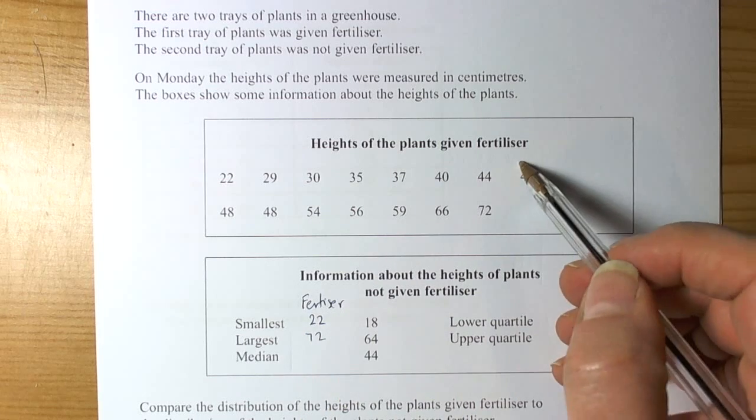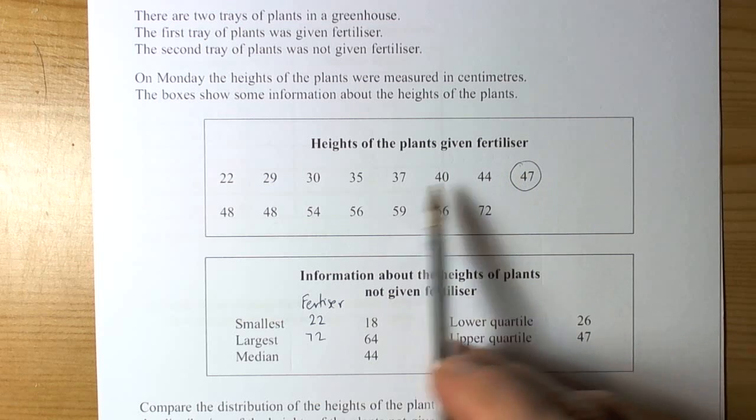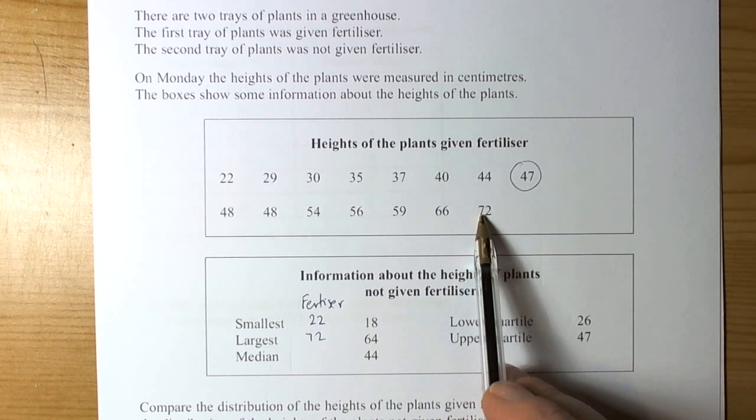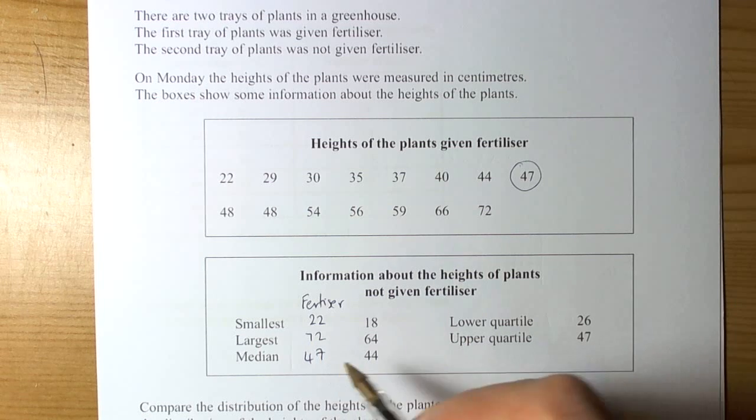The median is going to be 47. Counting from both ends, there are 7 numbers before it and 7 numbers after it, so 47 is in the middle. The median is 47.